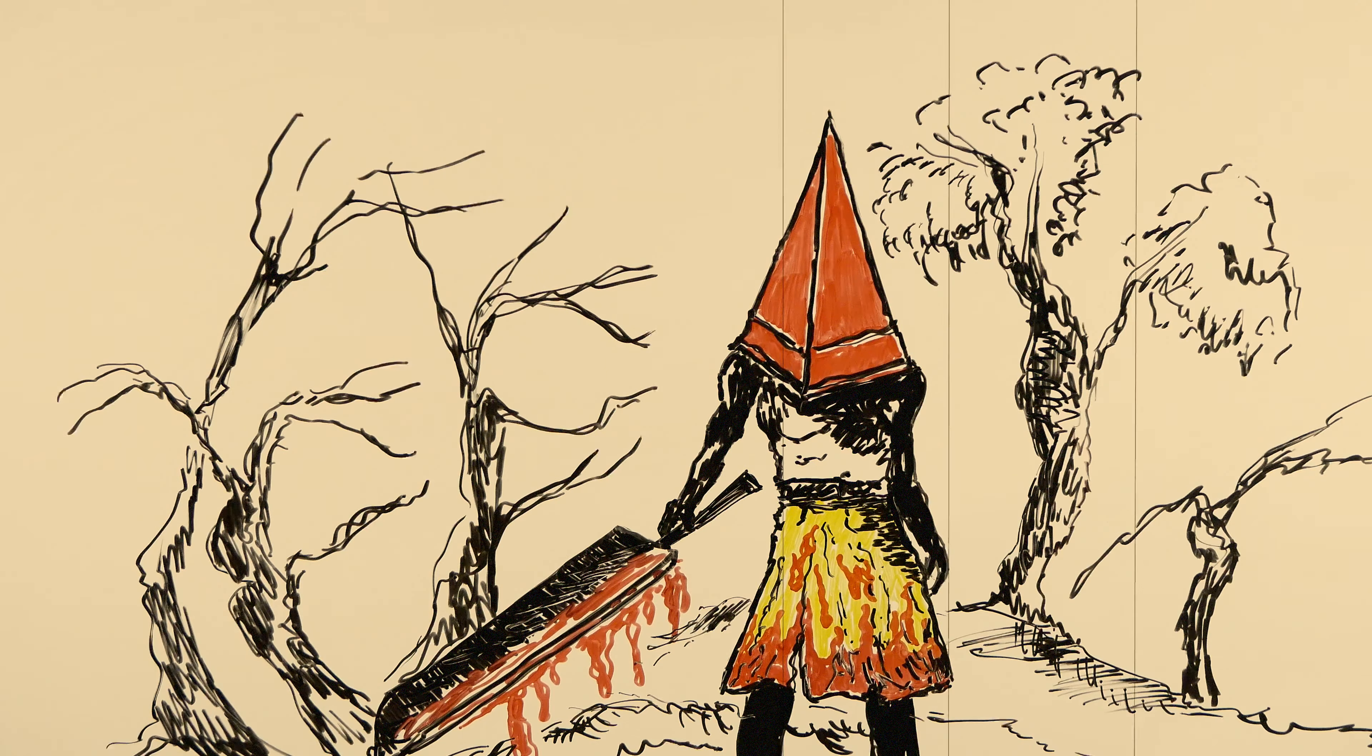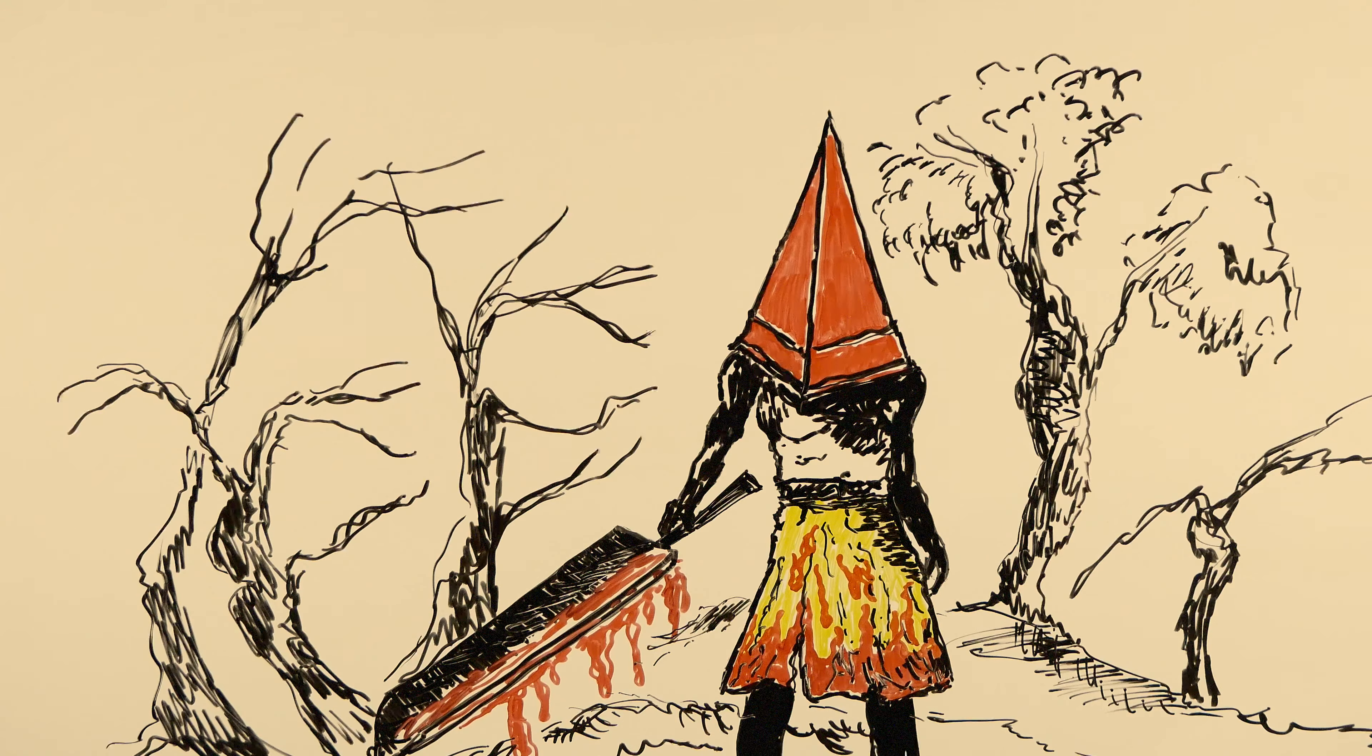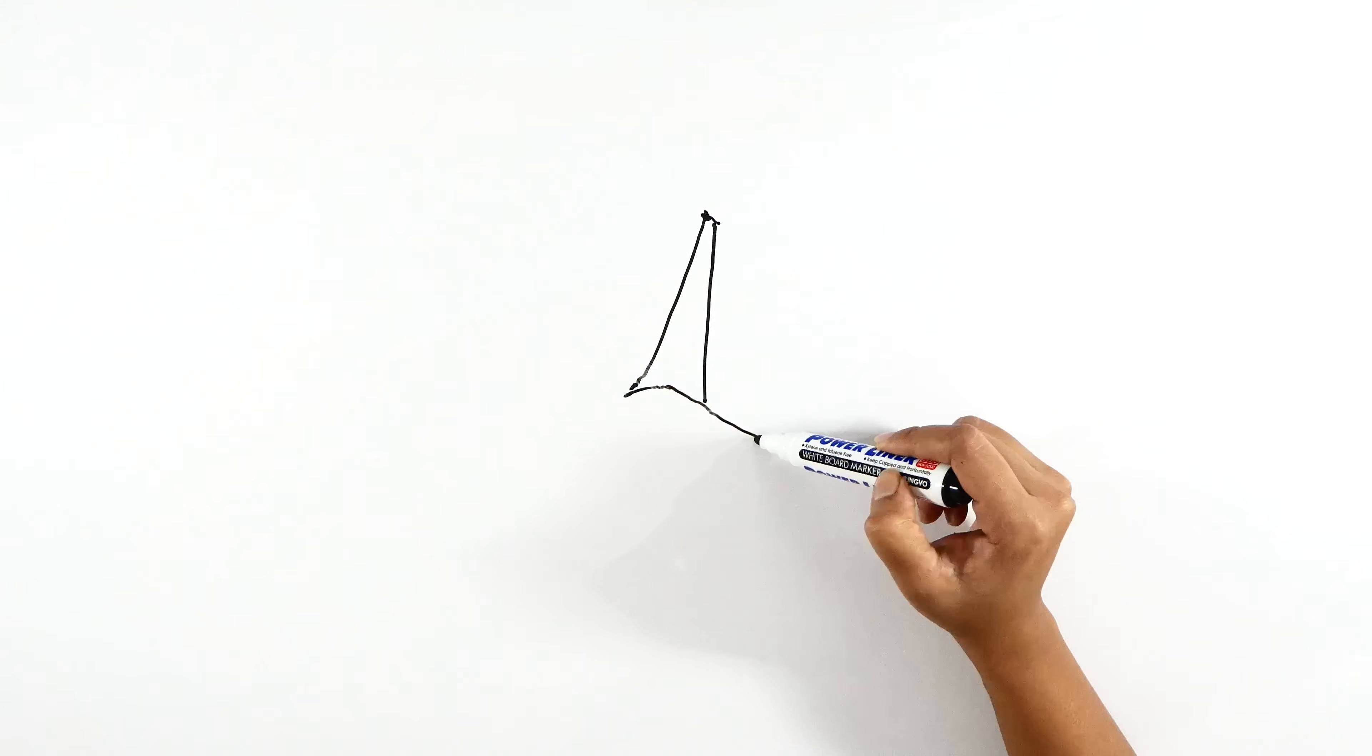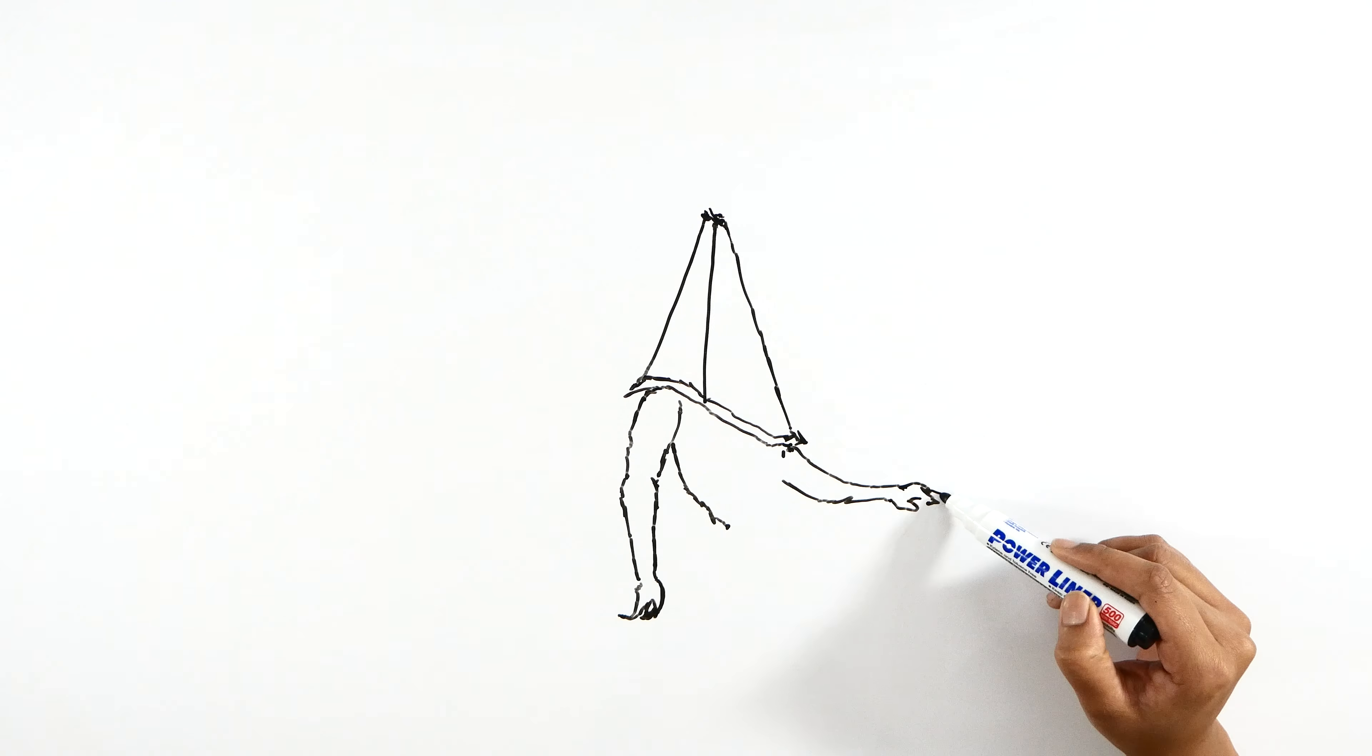The next feature is that the Pyramid Head won't speak. He grunts and moans painfully. He makes only such noises and nothing else. This shows James' mind, which is in deep pain.